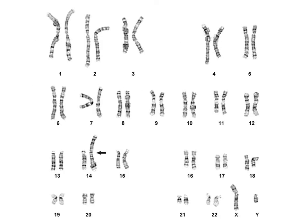Karyotypes can also be used to show chromosome abnormalities. This person had crossing over with a mistake, and they ended up with extra information being put on chromosome 14. A karyotype, though, is not going to show us if there's a mutation in one particular gene on a chromosome — it's just large problems with the chromosomes that show up.